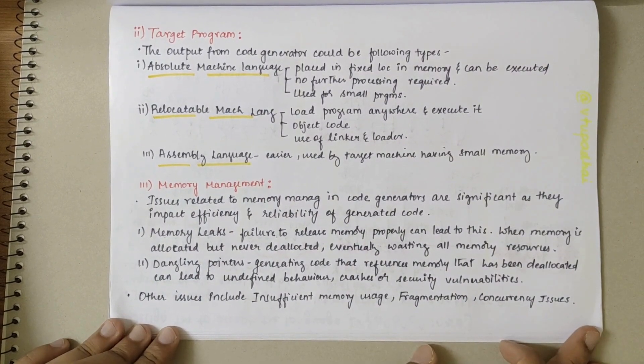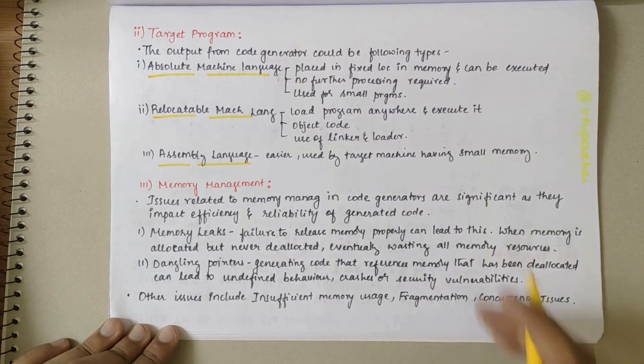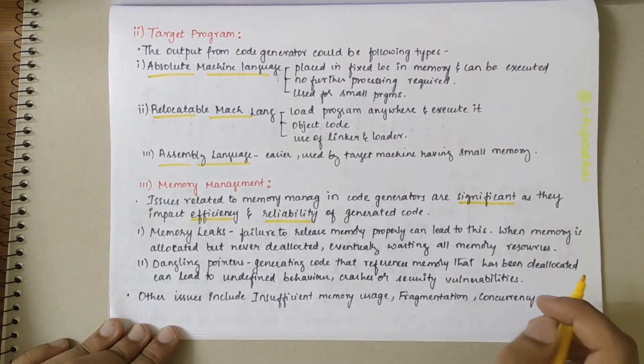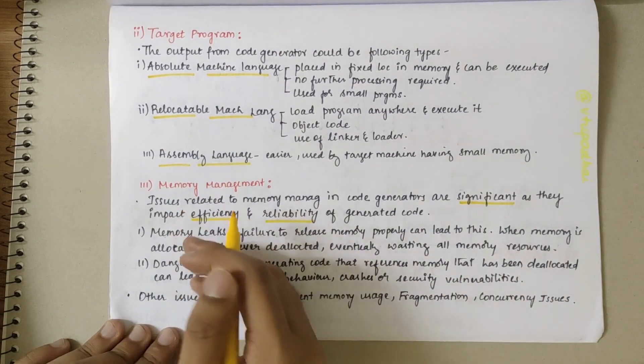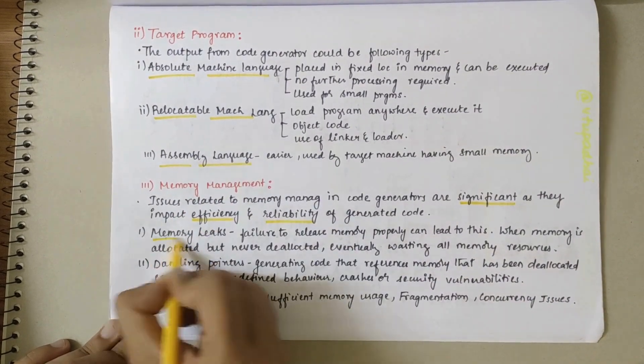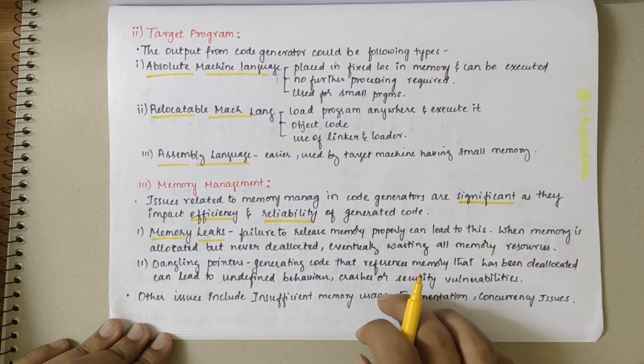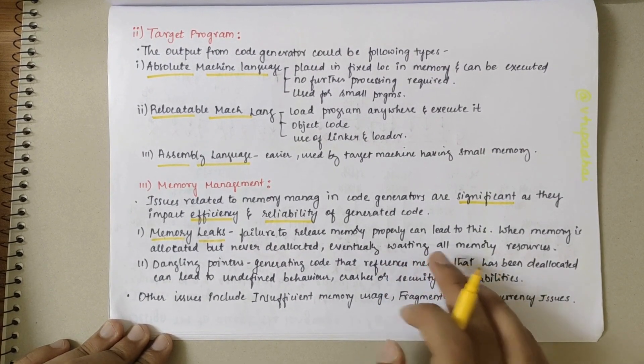Issues related to memory management and code generator are significant as they impact efficiency and reliability of generated code. The first one is memory leak - if there is a failure to release the memory properly, it could lead to memory leakage.